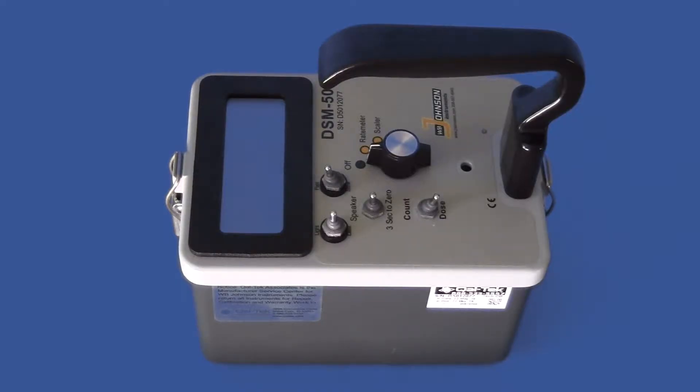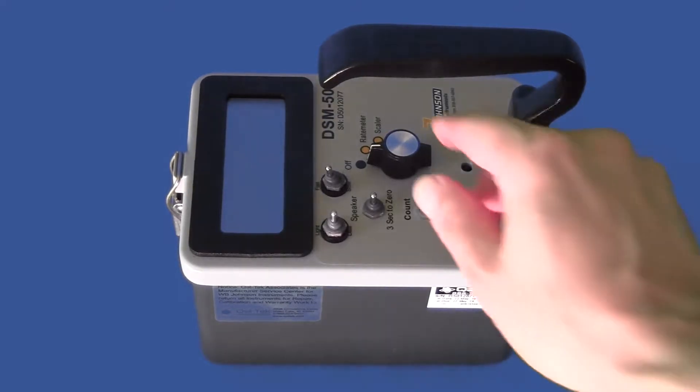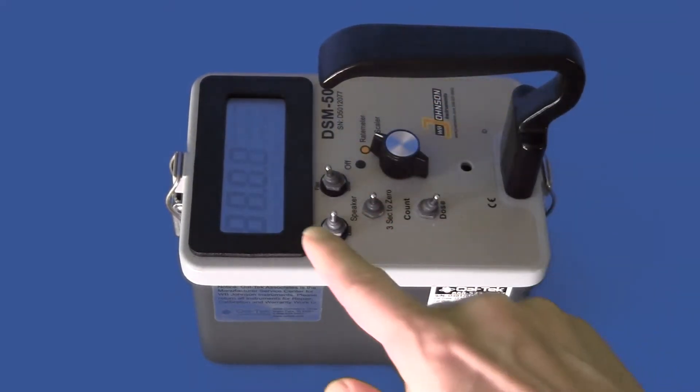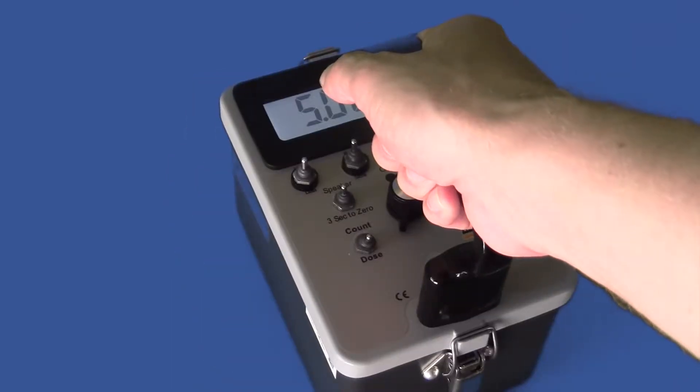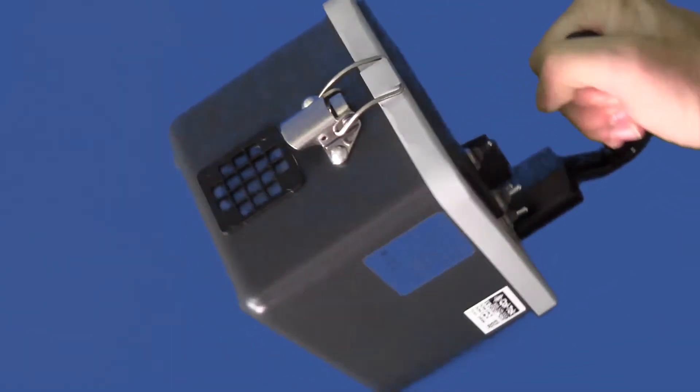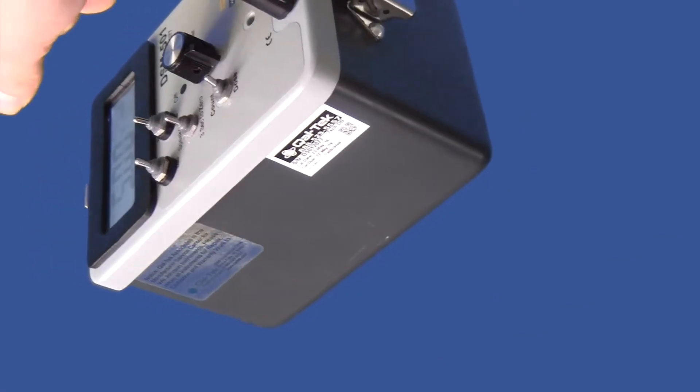Before we perform a field demonstration, let's have a closer look at the unit. As we power up, notice the oversize digital display. The detector window is located on the bottom front. This is where we aim and hover over the area of interest.